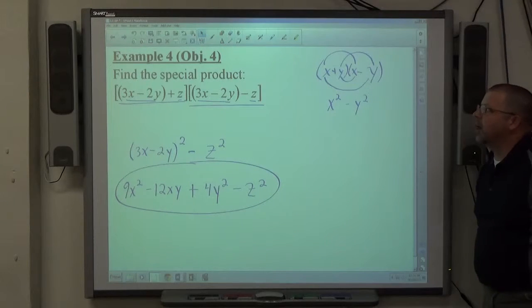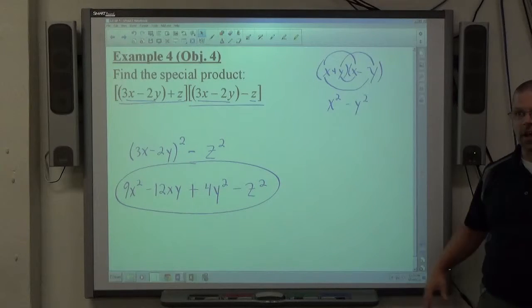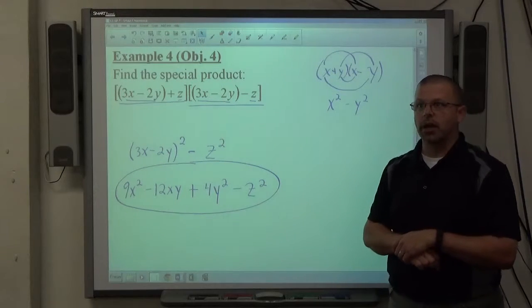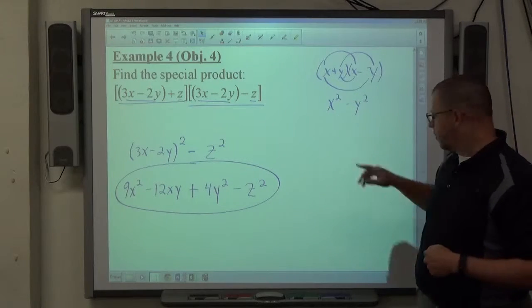If you have x plus y times 3x minus 5y, foil it. If it's not some special product, just do it like normal, foil it. But again, sum and difference of the same objects, difference of squares.